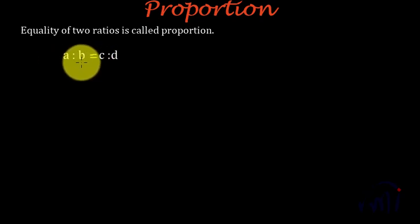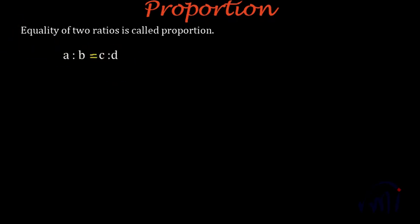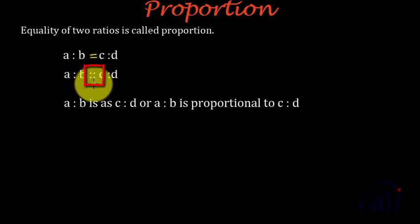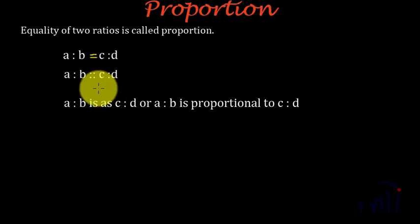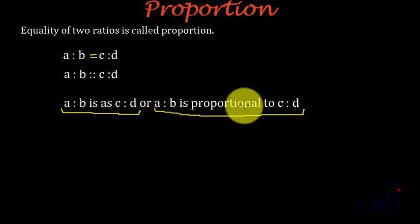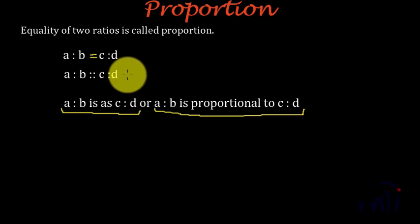These two ratios, A is to B and C is to D, are called in proportion. Sometimes they are also written as A is to B, then four dots as the corners of a square, then C is to D. It is read as A is to B is as C is to D, or A is to B is proportional to C is to D. These are the two ways to refer to these proportions.